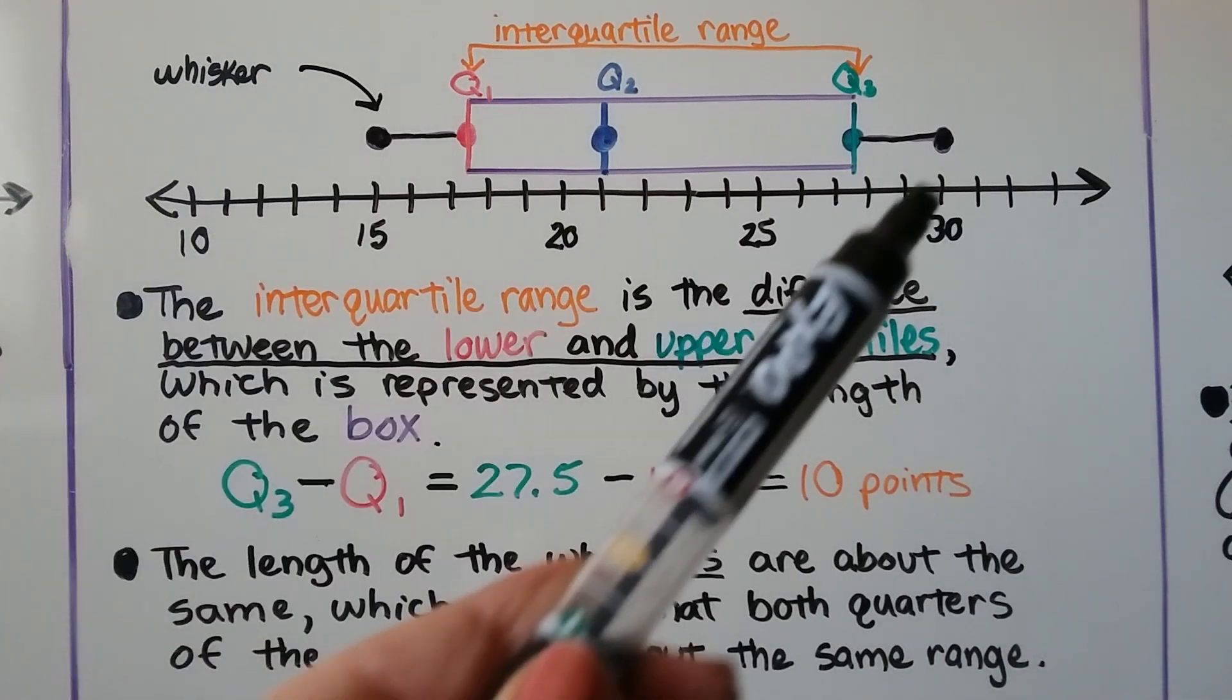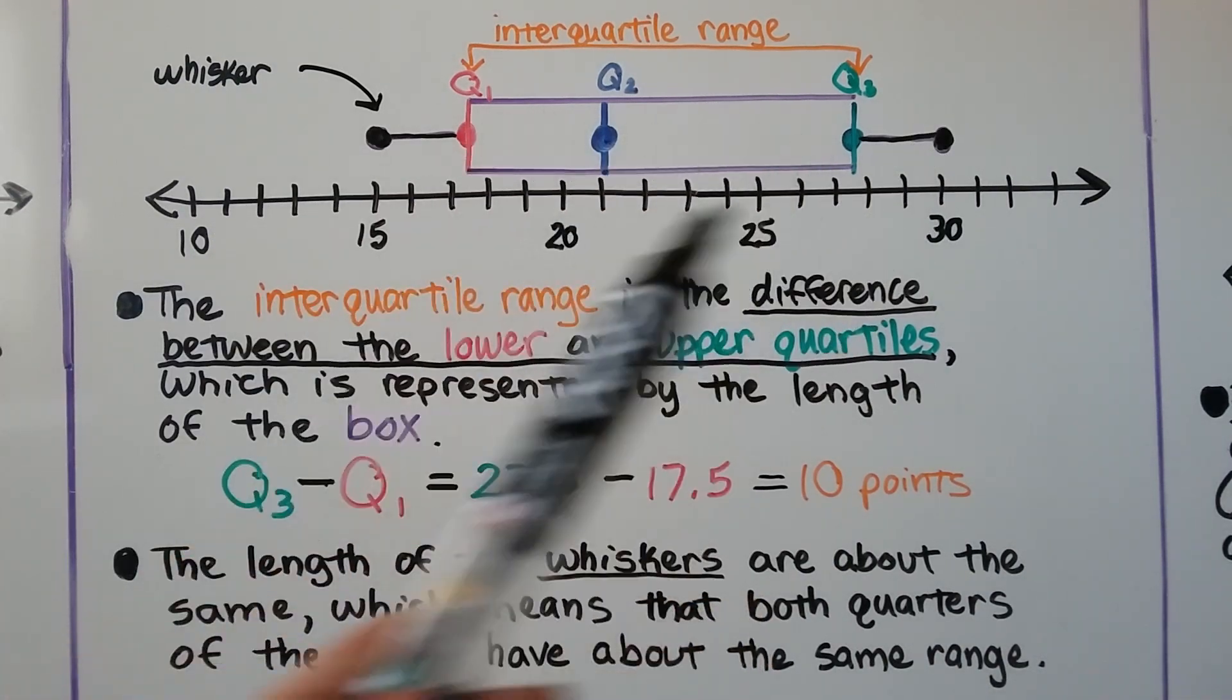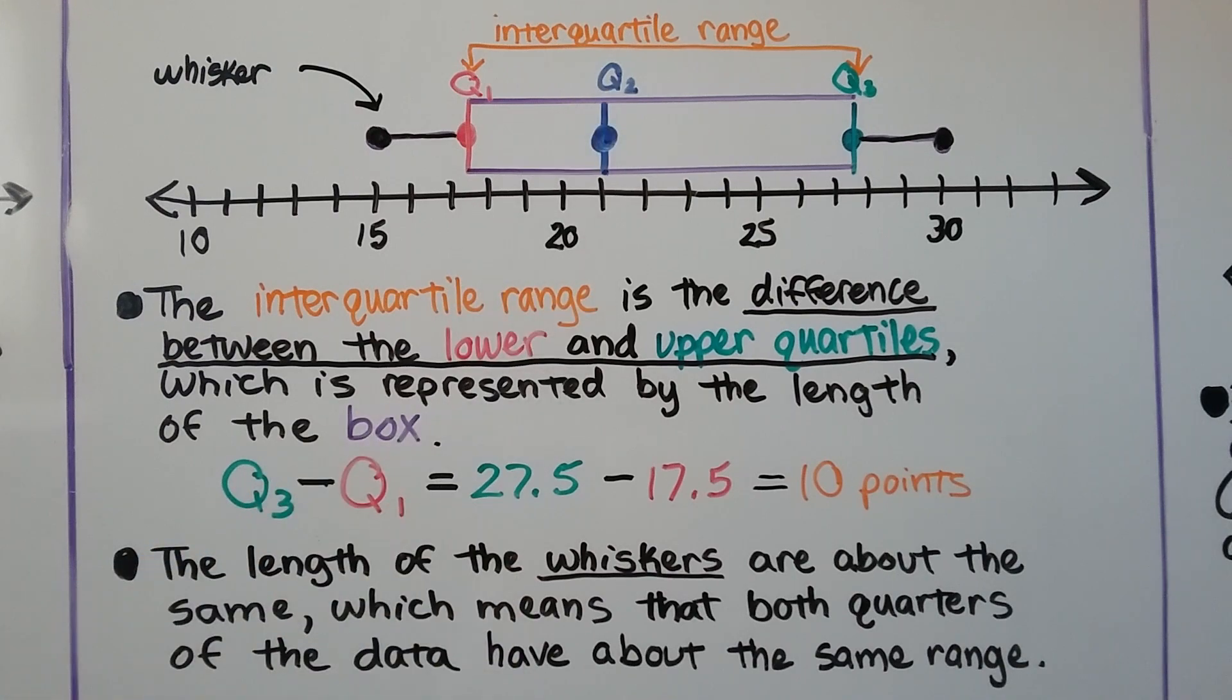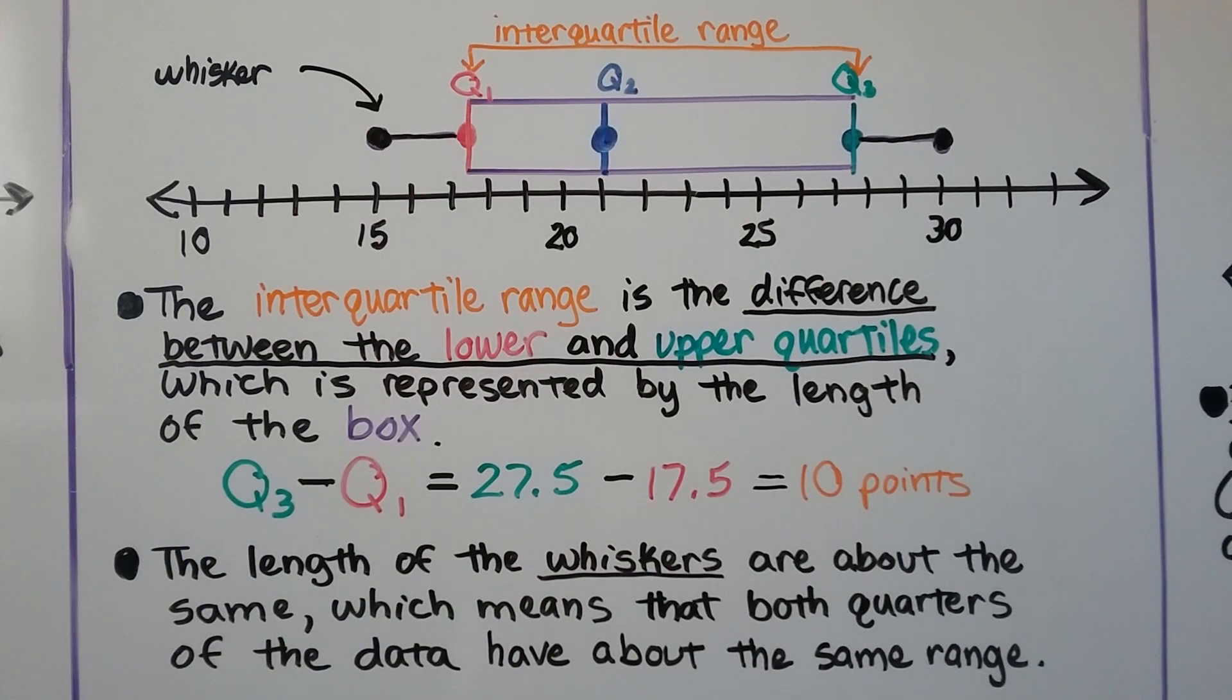So here we have our whiskers, here we have our box. We can see that this is the median right here. The interquartile range is the difference between the lower and upper quartiles, which is represented by the length of the box.